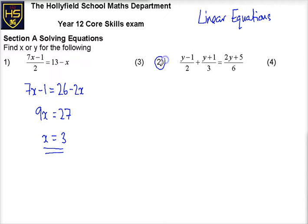If we go over and look at number 2 now, we can see this is a little bit more complex. We've got three terms, each term being a fraction. The first one over 2, the second one over 3, and the third one over 6.